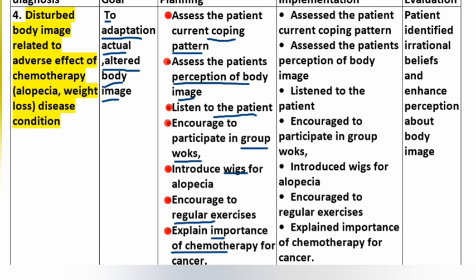Implementation: assessed the patient's current coping pattern. Assessed the patient's perception of body image. Listened to the patient. Encouraged to participate in group activities. Introduced wigs for alopecia. Encouraged regular exercises. Explained importance of chemotherapy for cancer.